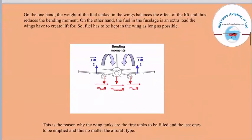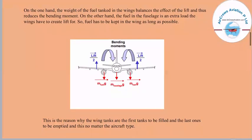The weight of the fuel in the wing tanks balances the effect of the lift and thus reduces the bending movement. So the fuel has to be kept in the wings as long as possible. This is the reason why the wing tanks are the first tanks to be filled and the last ones to be emptied, regardless of the aircraft type.